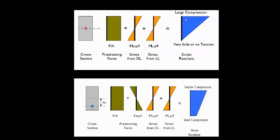For a simply supported beam with UDL, the moment WL²/8 gives compressive stresses at the top and tensile stresses at the bottom — this is the bending stress diagram. Similarly, the live load gives the same pattern: compressive on top and tensile at the bottom. The bending stress formula is σ = My/I, derived from the bending equation M/I = σ/y.